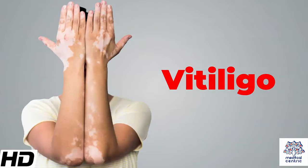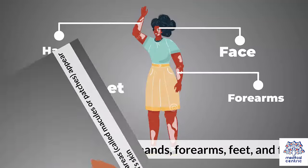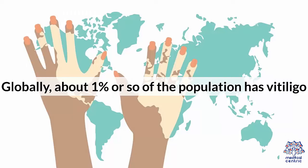Today's topic is vitiligo. Vitiligo is a skin disorder in which smooth white areas, called macules or patches, appear on a person's skin. It generally starts on the hands, forearms, feet, and face. Globally, about 1% or so of the population has vitiligo.